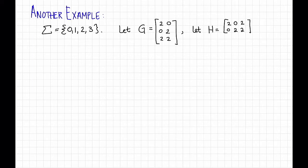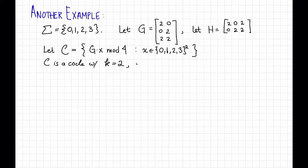Now consider the code C with generator matrix G. That is, C is the set of G times X mod 4 for all X in {0, 1, 2, 3} squared. Now C is a code with message length k equals 2, block length n equals 3, over the alphabet sigma.